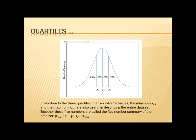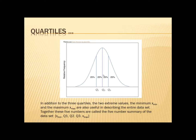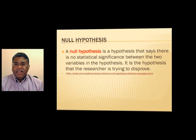In addition to the three quartiles, there are extreme values — the maximum and the minimum — giving us five values. The five-number summary of a data set is: minimum, quartile one, quartile two, quartile three, and maximum. You can represent this as a box from 0 to 25, 25 to 50, 50 to 75, and 75 to 100 percent. This five-number summary gives you a lot of information about that particular data set.